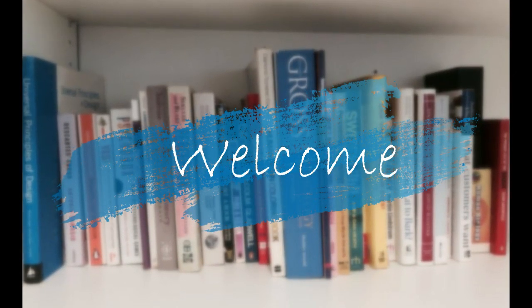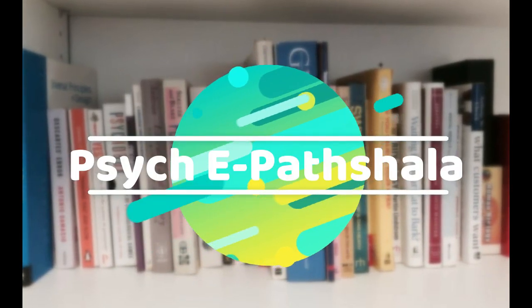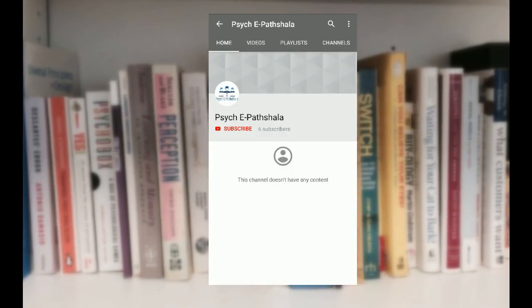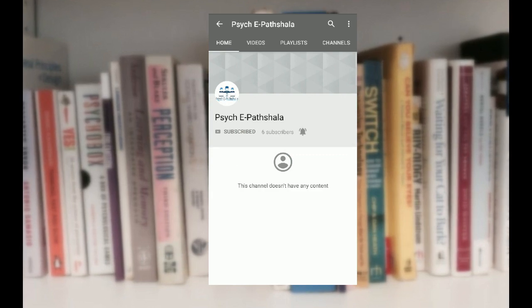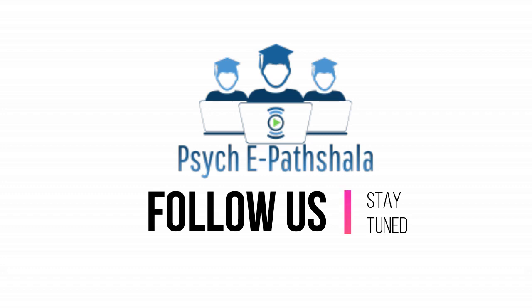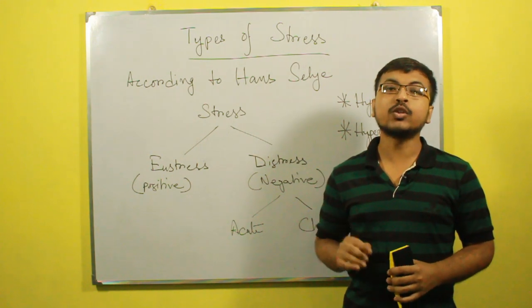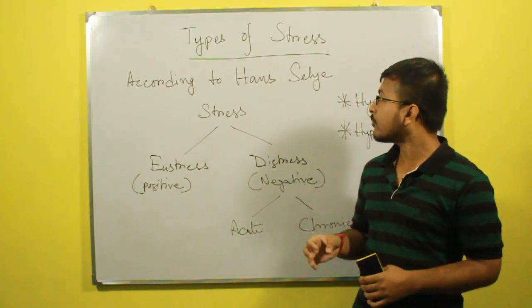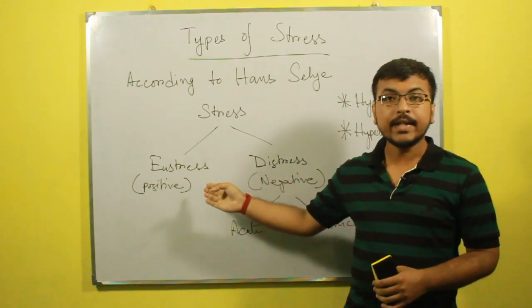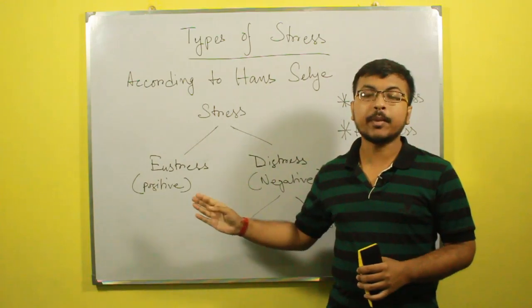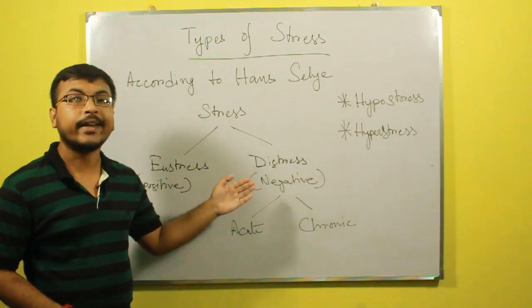Let's start today's topic. Now we will discuss about the types of stress. According to Hans Selye, the pioneer of stress research, stress is of two types: one is eustress and another is distress. Eustress is a positive type of stress and distress is a negative type of stress.